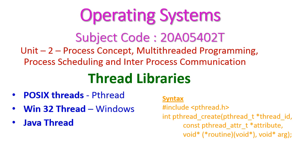Hello friends, welcome to this operating system class. In this class we will discuss thread libraries. We have three different libraries: the first is POSIX thread (pthread), the second is Win32 thread (Windows thread), and the third is Java thread. Let us see all of them one by one in this lecture.